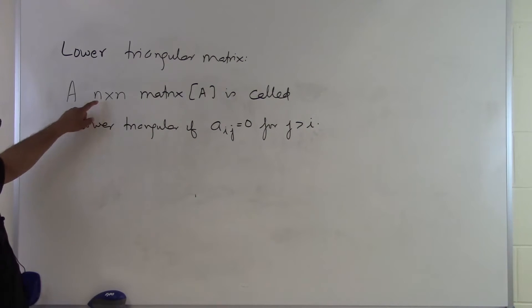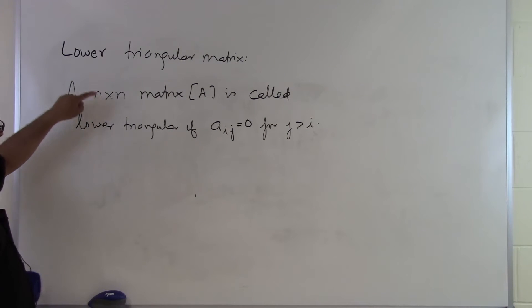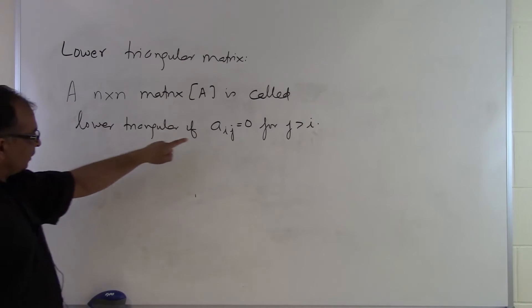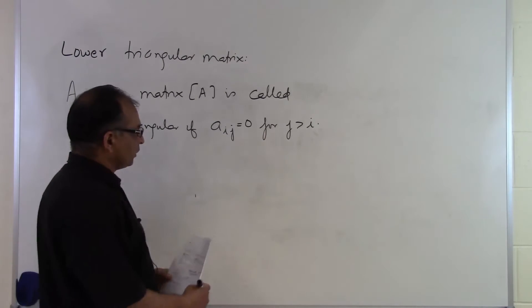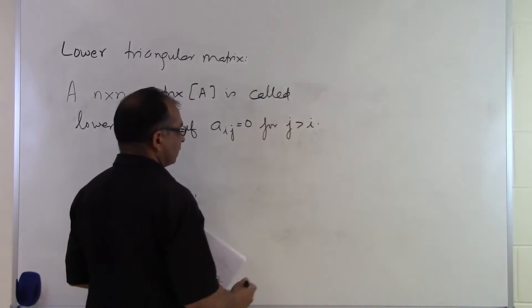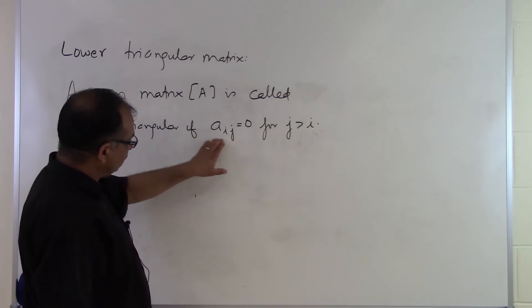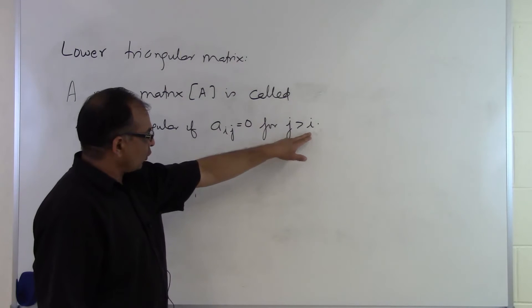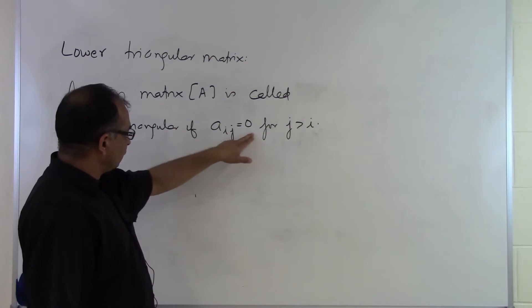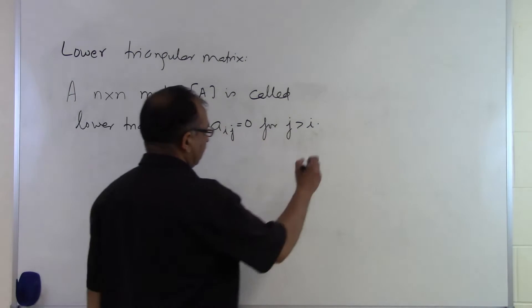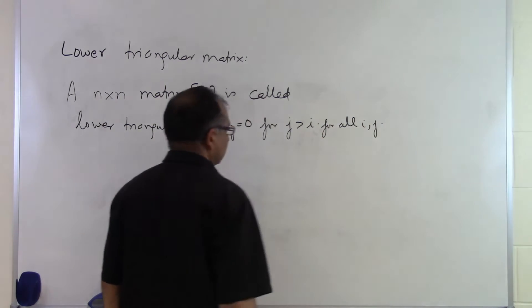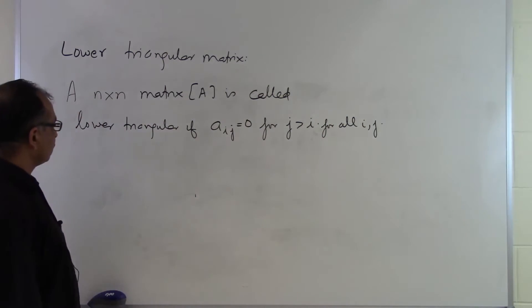The first thing about a lower triangular matrix is that it has to be a square matrix, so the number of rows equals the number of columns. These elements have to be zero — the ones for which the column number is bigger than the row number. If the column number is bigger than the row number, that element has to be zero for J greater than I, for all I and J, where I and J each go from 1 to n.